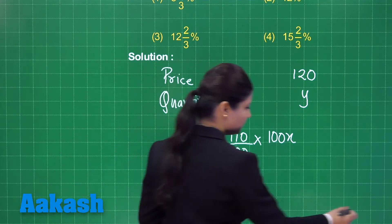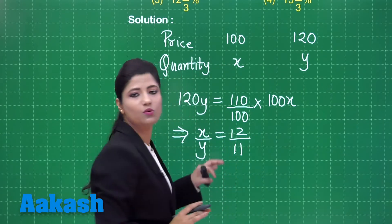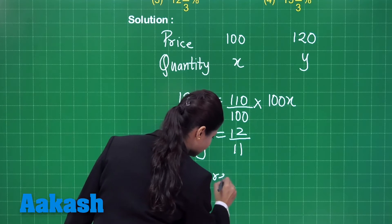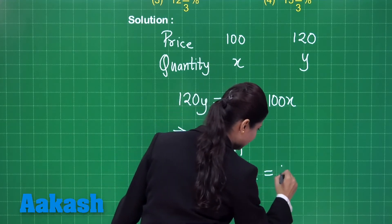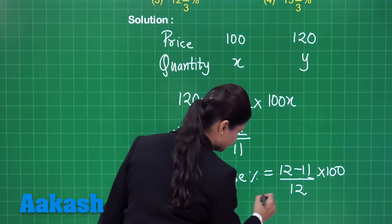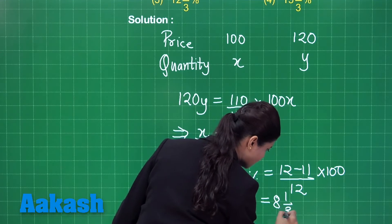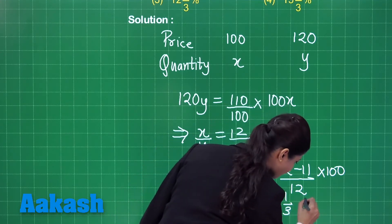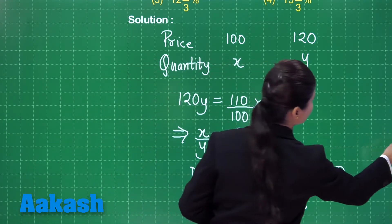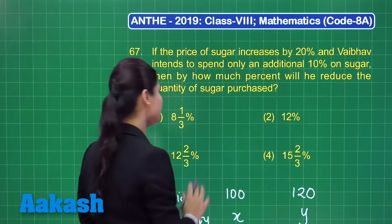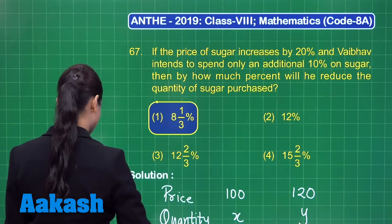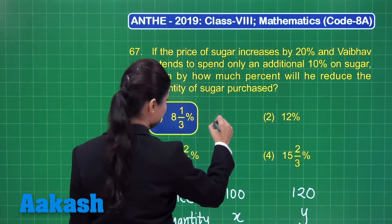We can clearly see that the original quantity was more than the new quantity, so there is definitely a decrease. The decrease percent will be given by (12 minus 11) upon 12 into 100, which simplifies to 8 and 1 upon 3, that is 25 upon 3 percent. This is the decrease percentage in the quantity of sugar bought. Out of the 4 options, the answer is option number 1.